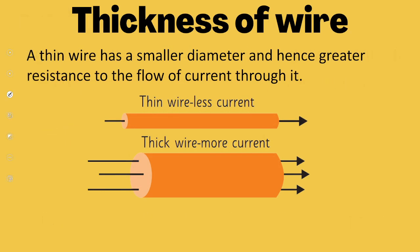Next, we move on to wire thickness. A thin wire has a small diameter but greater resistance. If we talk about a thick wire, then the diameter is large but the resistance is small.